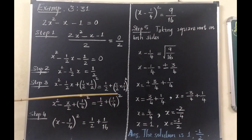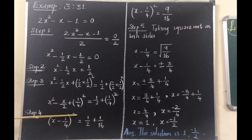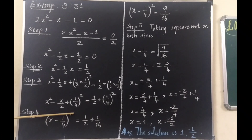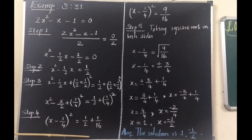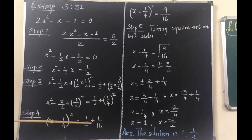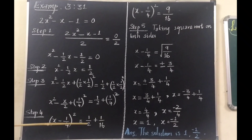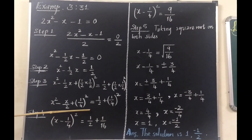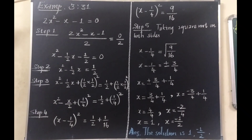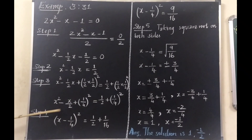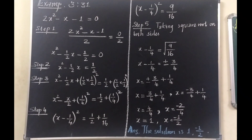Simplify only the numbers on the right hand side — don't expand the perfect square again. Taking the LCM of 2 and 16, which is 16: 1/2 becomes 8/16, and 8 plus 1 is 9, so the right hand side is 9/16. Therefore (x minus 1/4) whole squared equals 9/16.